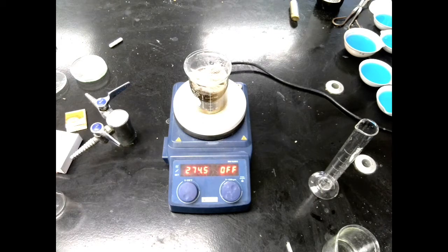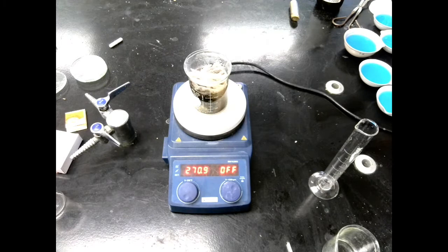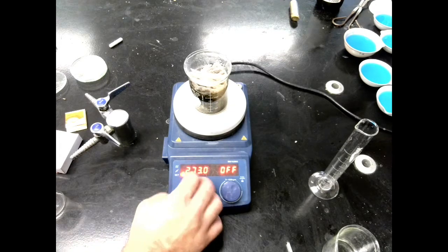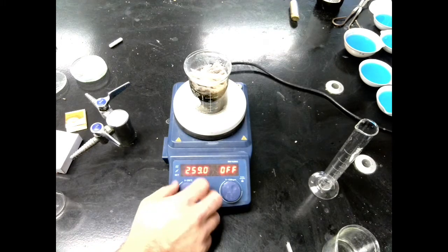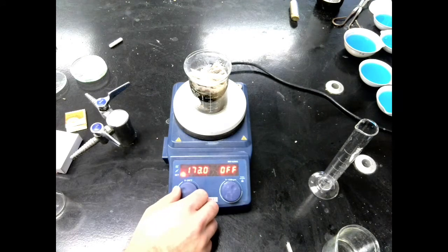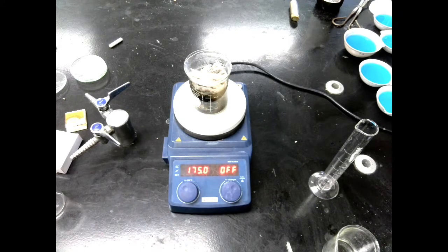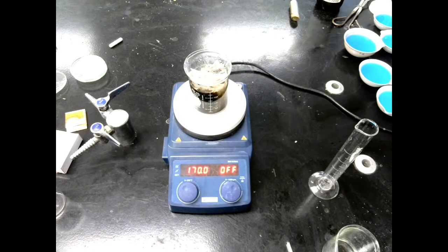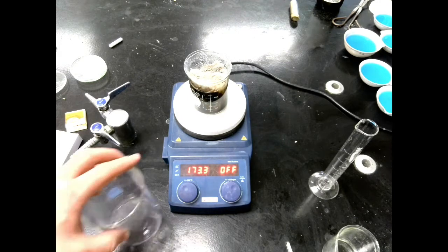Once we do get it to a simmer, we are going to want to turn that heat down. Otherwise, we're just going to start to boil over. So we'll bring it down to about 175. And then we're going to let it simmer like that for about 10 to 15 minutes.